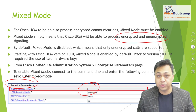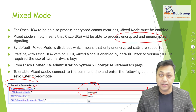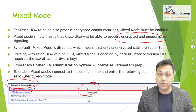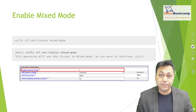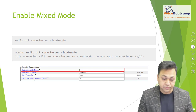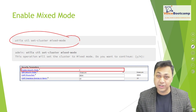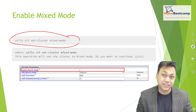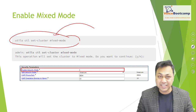Starting with CUCM version 10.0, mixed mode is enabled by default. Prior to version 10, it was required to use two hardware keys. If you see in your enterprise parameters that mixed mode is disabled, you can SSH to your Call Manager server and issue the command: utils ctl set-cluster mixed-mode. This will ensure that your server is running in mixed mode.